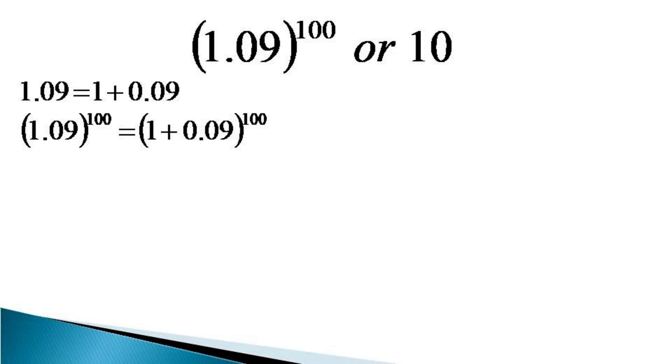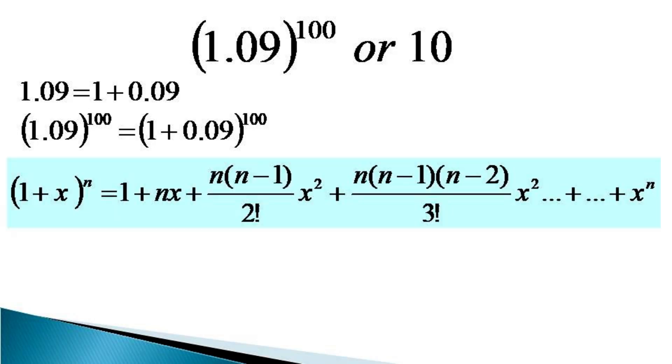And now we make use of the binomial theorem, which states that (1 + x)^n will be equal to 1 + nx + n(n-1)/2! × x² plus so on, and the last term being x raised to the power n.